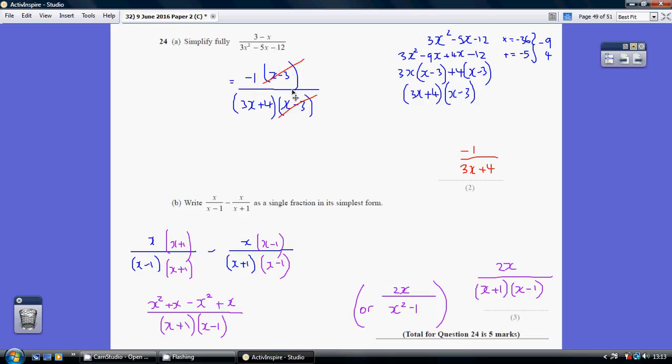Just to double-check: -1 times x would be -x, and -1 times -3 would be +3. Now what I can do is cancel out these two terms, leaving me with a final answer of -1/(3x+4).